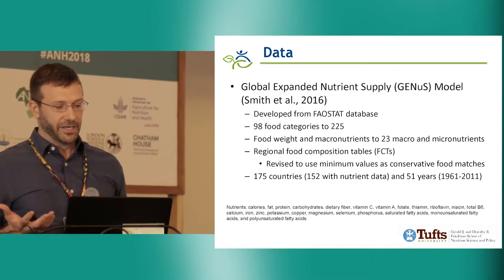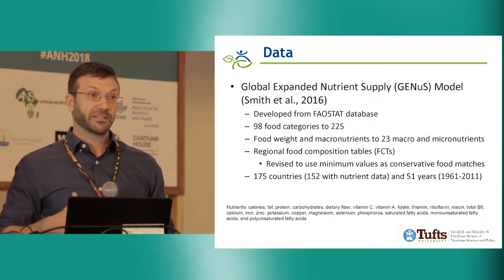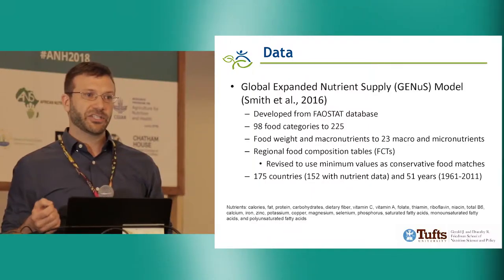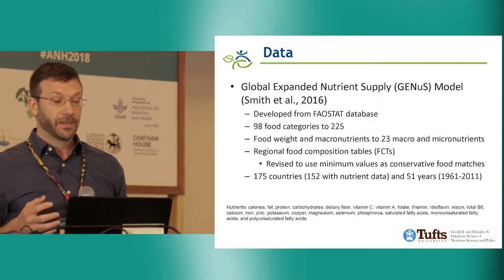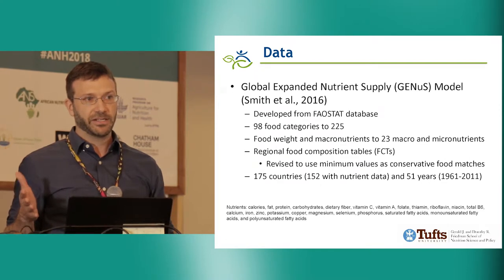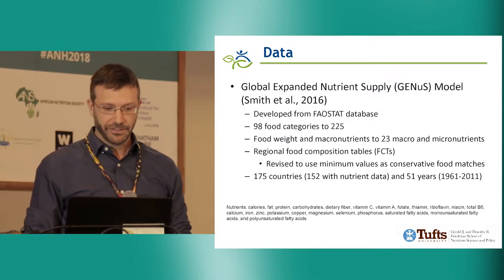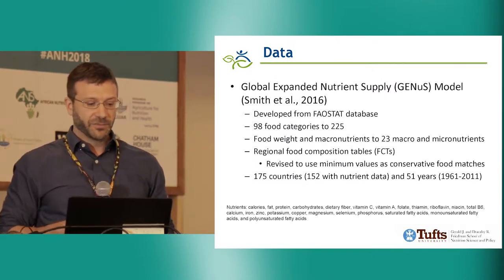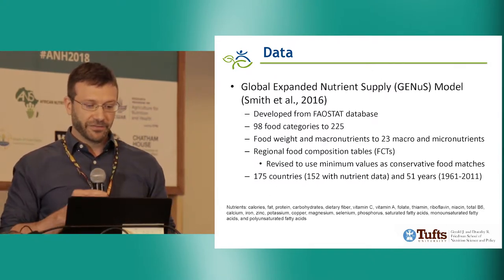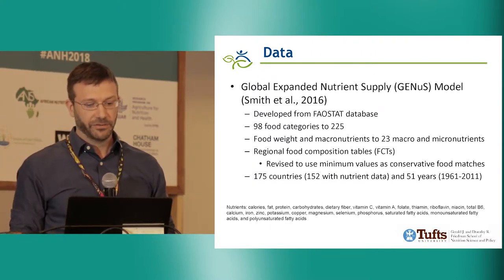The second revision I've been undertaking is to actually disaggregate this database out even further. The GENUS model contains information on net nutrient availability, but does not have information specifically on the components of production and trade that contribute to that. So I've been working on disaggregating this model even further. The GENUS model includes up to 175 countries and 51 years, from 1961 through 2011.